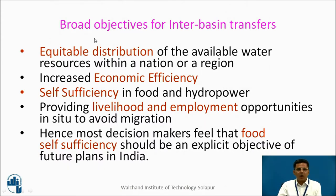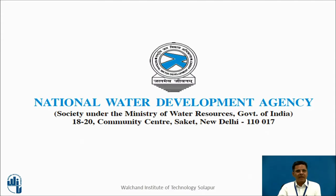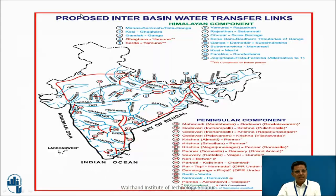The broad objectives of interbasin transfer are: first, equitable distribution of water resources; second, self-sufficiency in food and hydropower; and third, providing livelihood and employment for rural people and food self-sufficiency. The government is working on proposals given by the National Water Development Agency (NWDA), which has proposed these interbasin water transfer links.